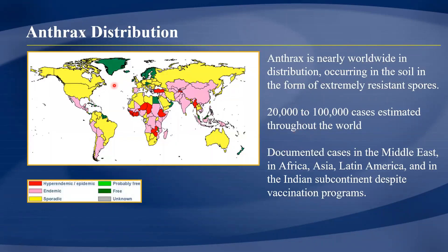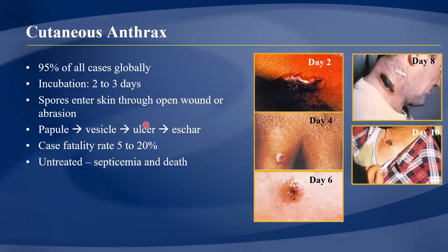In terms of distribution, anthrax is found all over the world but is almost endemic in certain regions, particularly sub-Saharan Africa. Some cases occur sporadically in parts of America and Europe, which have relatively few cases, while India, Asia, and Africa have the highest burden of disease.